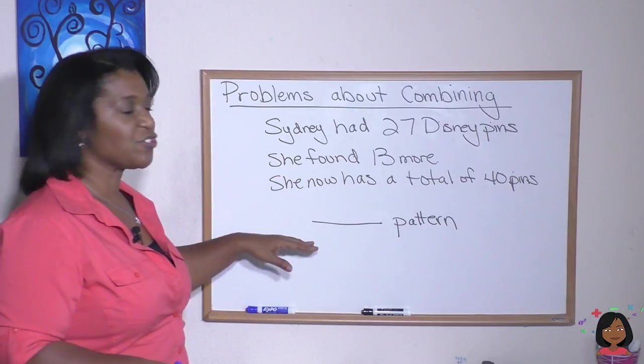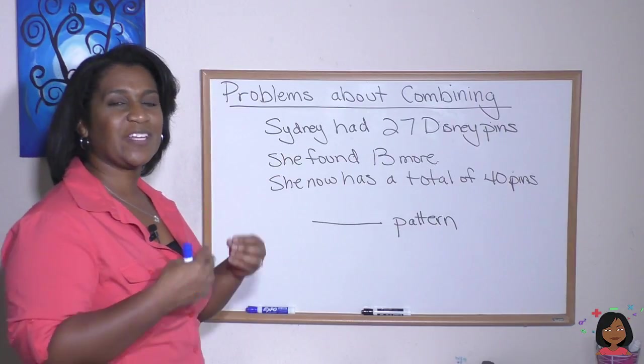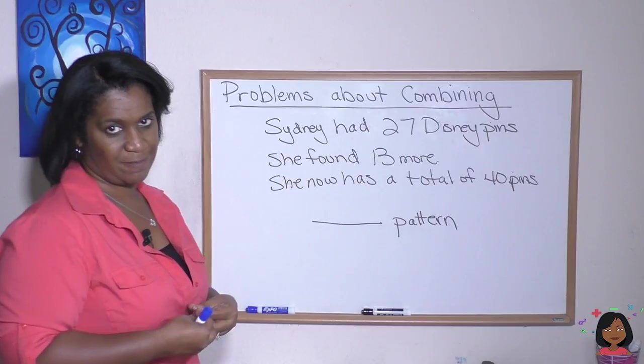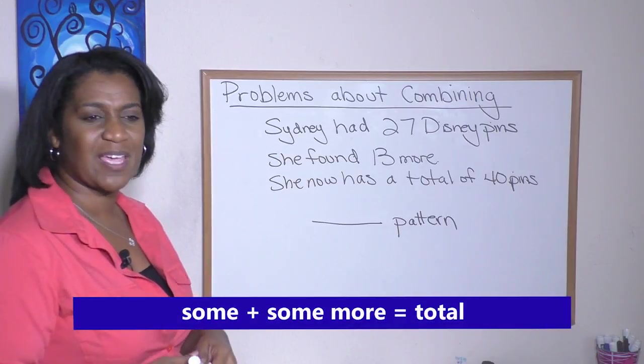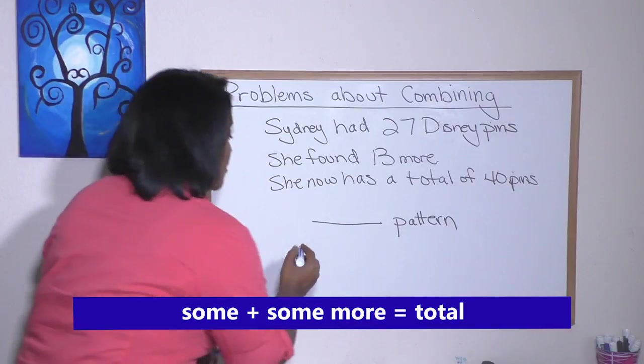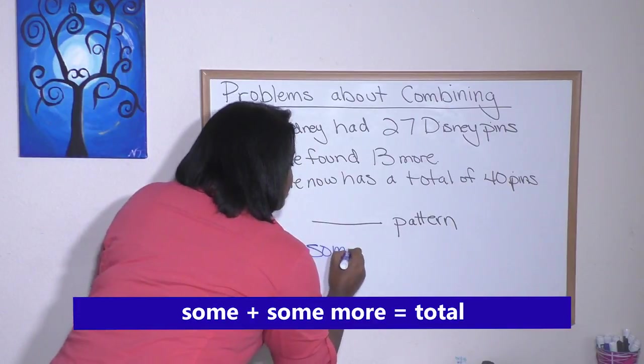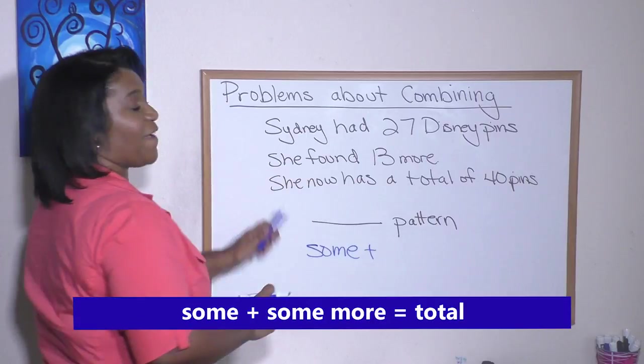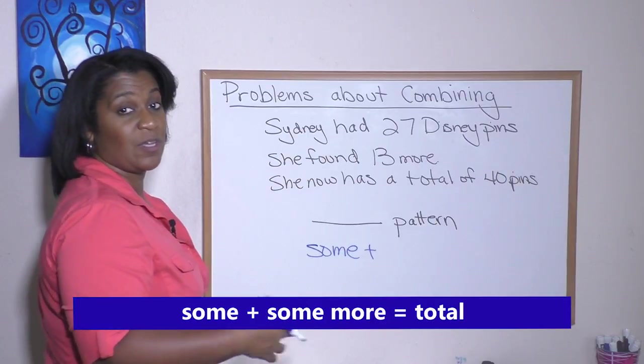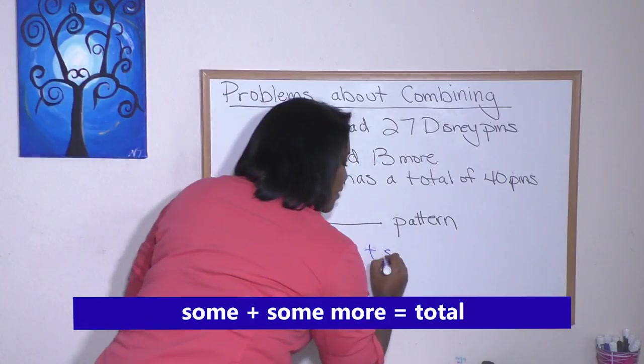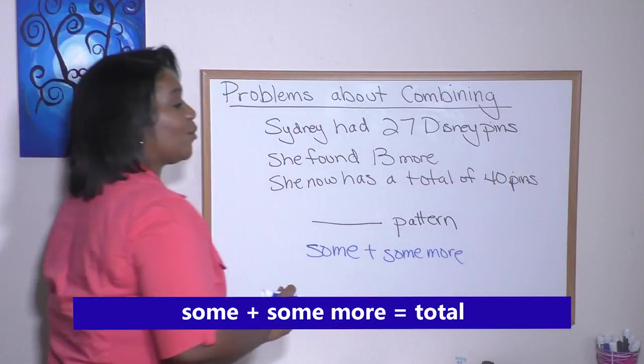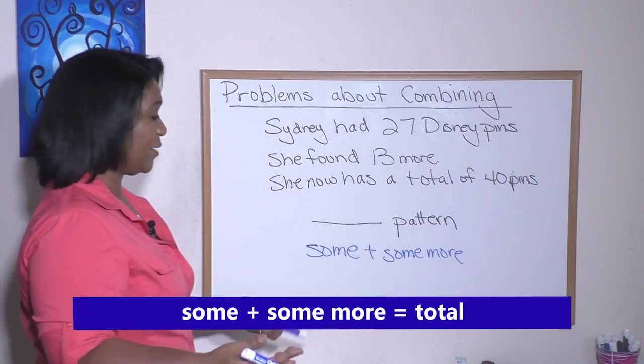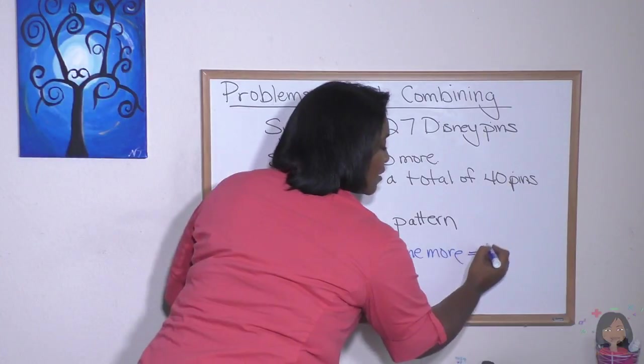So our question to you is what kind of pattern is this? Well, let's take a look. Sydney had 27 Disney pins. So we start off by saying she had some pins. So some, then she found 13 more. So she added some more pins and now she has a total of 40. That equals the total.